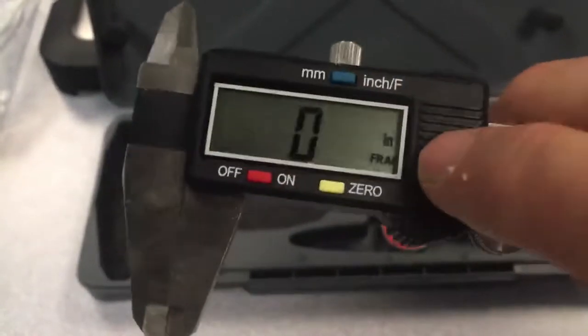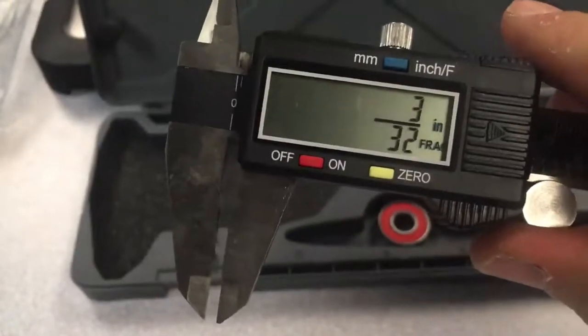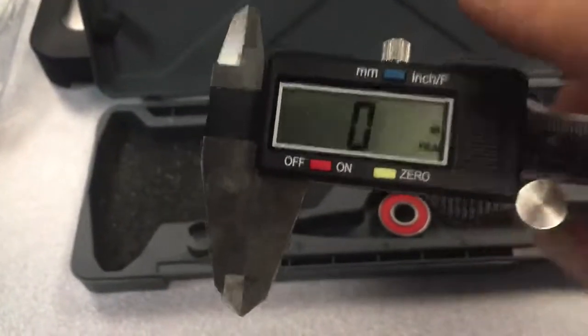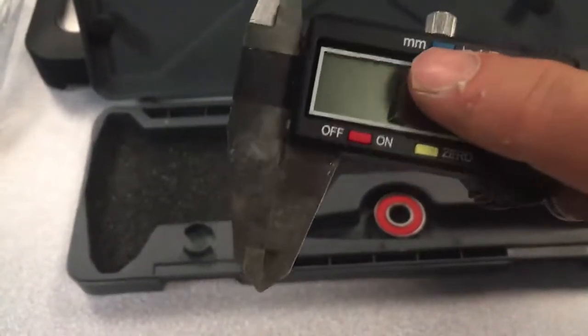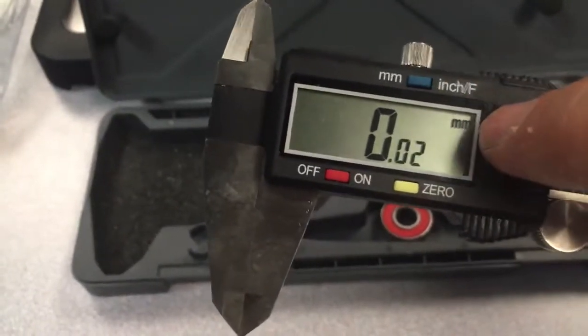I can also switch it to fraction inches. In other words, where it'll show it as a fraction, a sixty-fourth and so forth. For the fidget spinner activity, we're going to be in millimeters. We want to click on that until it says millimeters.